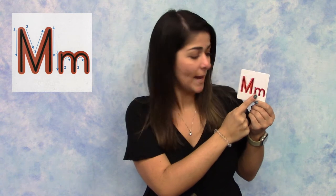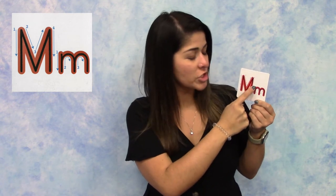Then we have our lowercase M. You're going to start with a smaller line at the top, come down, go back up and around a curved line, and then around again with another curved line.